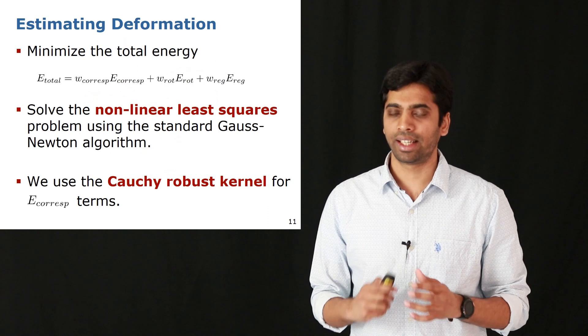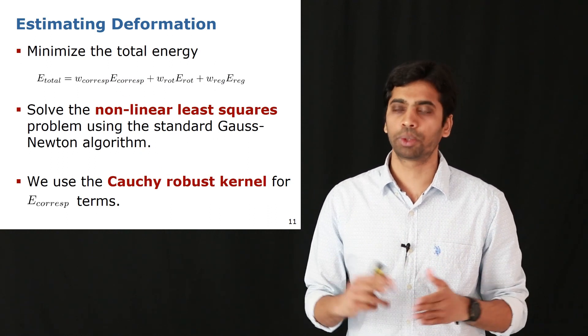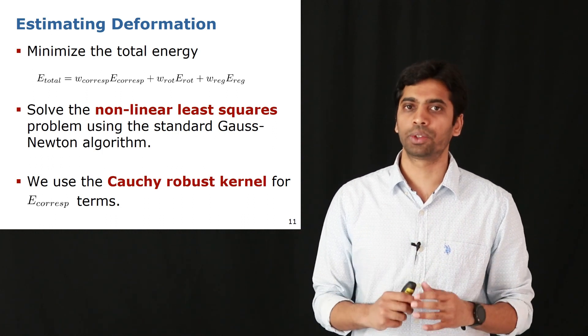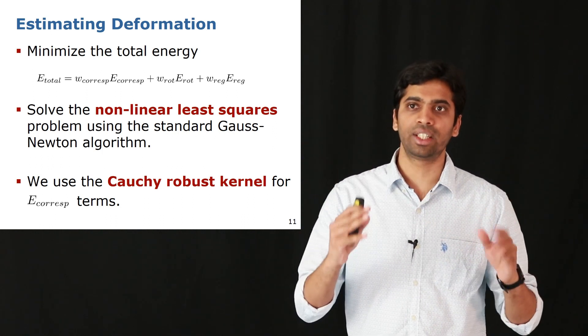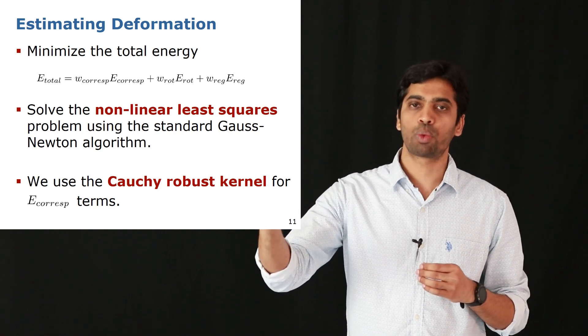Now that we have defined all these energies, we solve the minimization problem as a non-linear least squares problem and employ the standard Gauss-Newton algorithm to solve this. The solution is the set of affine transformations which map skeleton S1 onto S2.